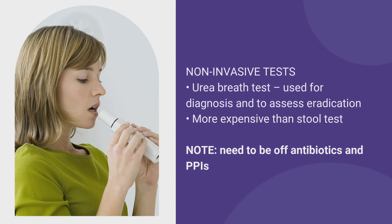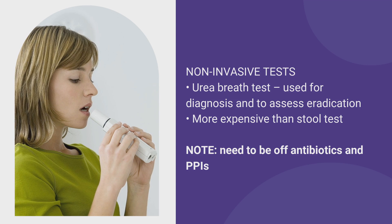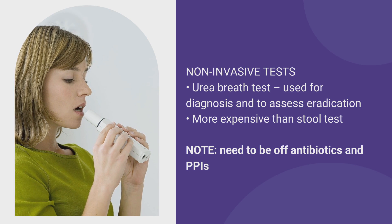The third non-invasive test is a urea breath test, in which you ingest a substance and then they measure the amount of urea in your breath over a certain period of time to see whether you have evidence of H. pylori. This is actually a very good test — you can use it for both diagnosis and to determine eradication — but it's a little more expensive, which is why people have moved more toward the dual antigen test. One important thing to remember is that because acid or medications can suppress the infection, you need to be off antibiotics as well as off proton pump inhibitors when getting these tests done to ensure the most accurate result.